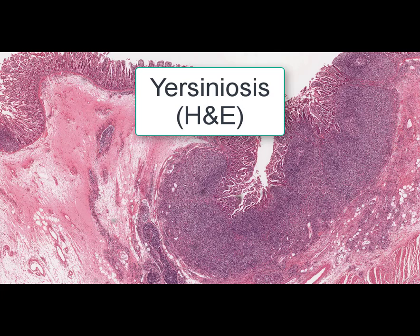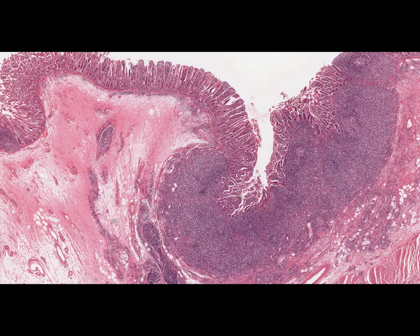On this slide we can see a part of small intestine. The stain is hematoxylin and eosin, and the name of the slide is yersiniosis. It is an intestinal infection caused by the bacteria Yersinia enterocolitica, and there are three forms of this disease.